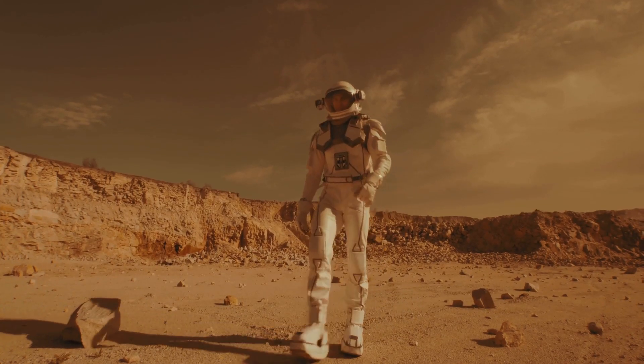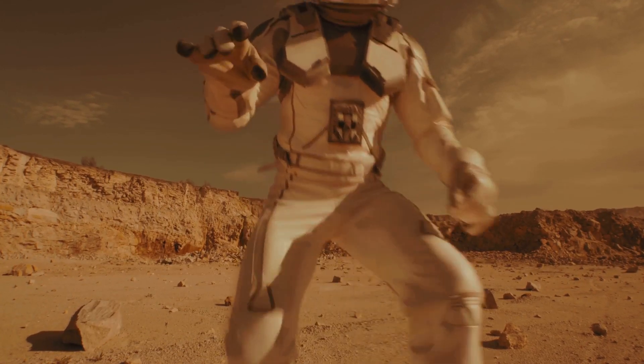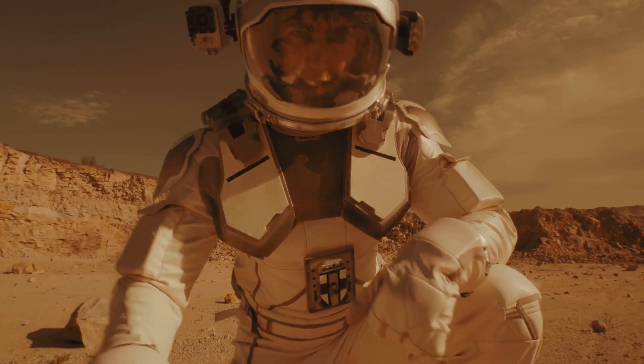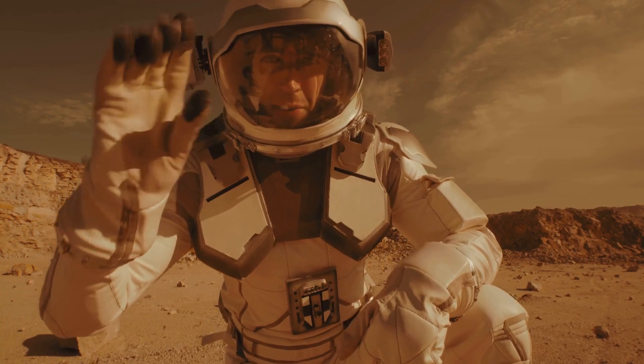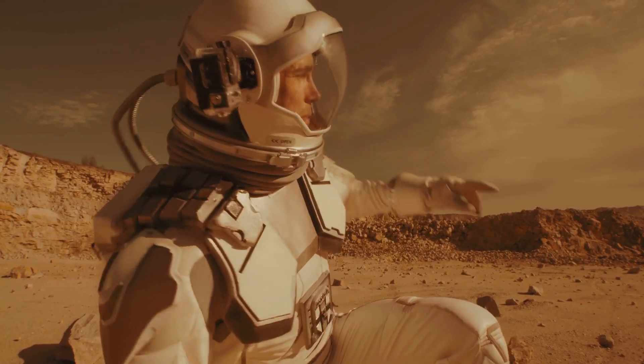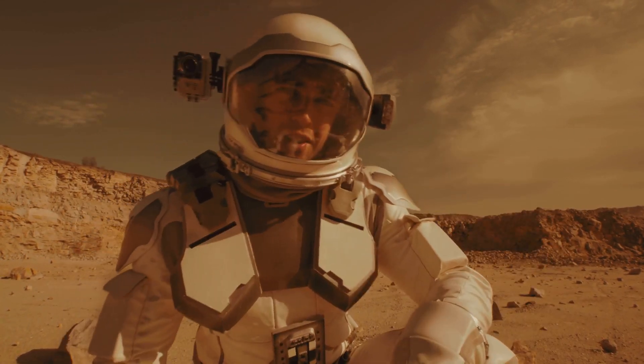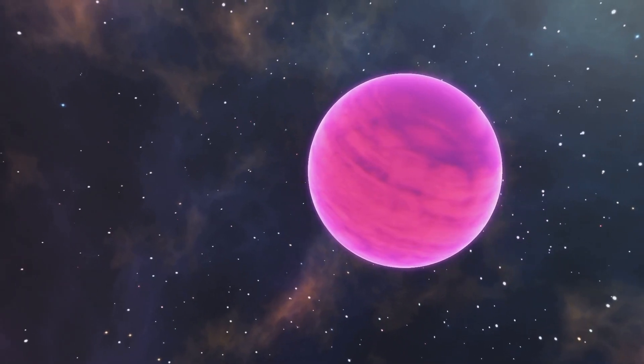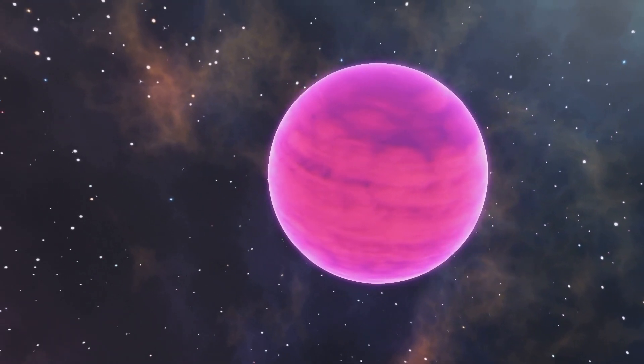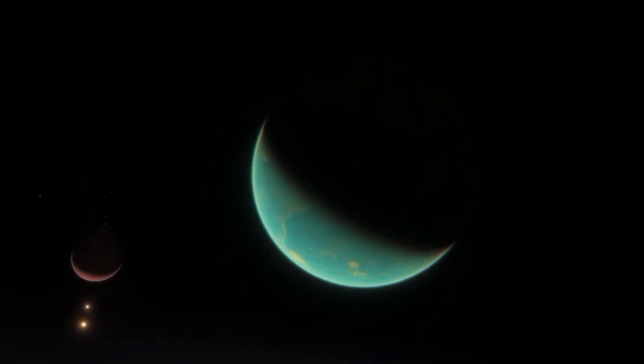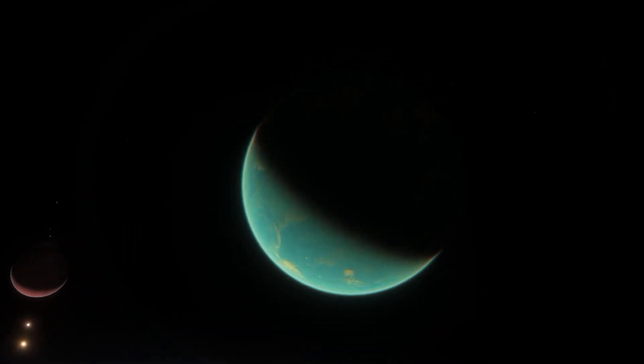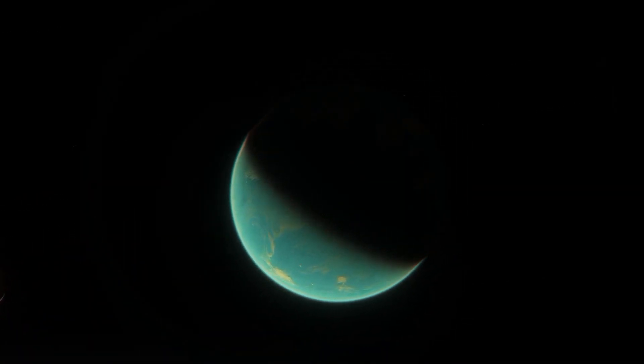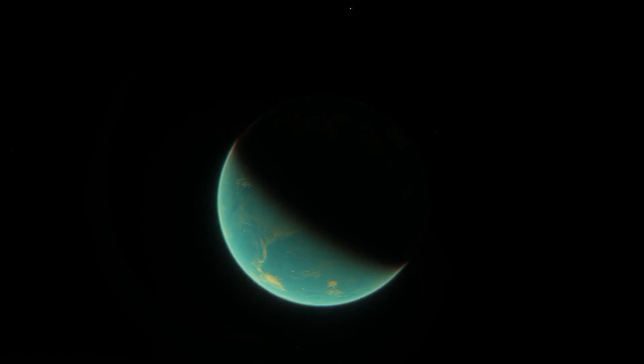This means that a person standing on the surface of HD 40307 G would feel only slightly heavier than they do on Earth. Imagine carrying a small backpack. That's the kind of difference you might notice. However, the similarities between the two planets likely end there. HD 40307 G's environment is vastly different from Earth's, with conditions that could be challenging for human life.